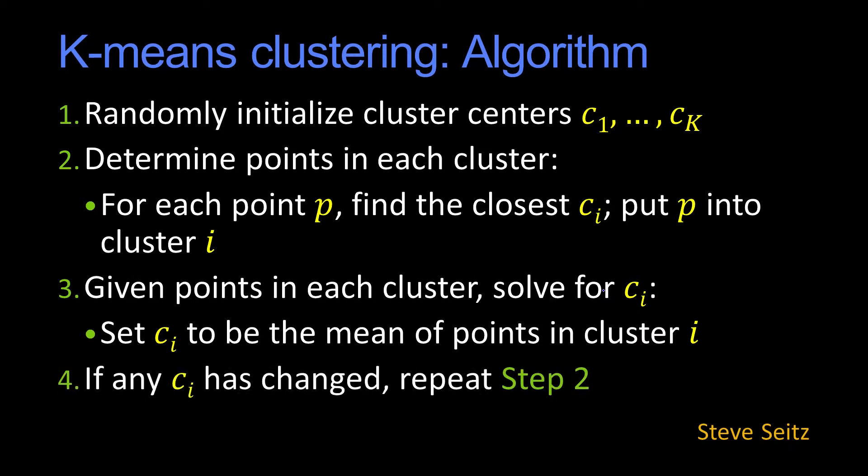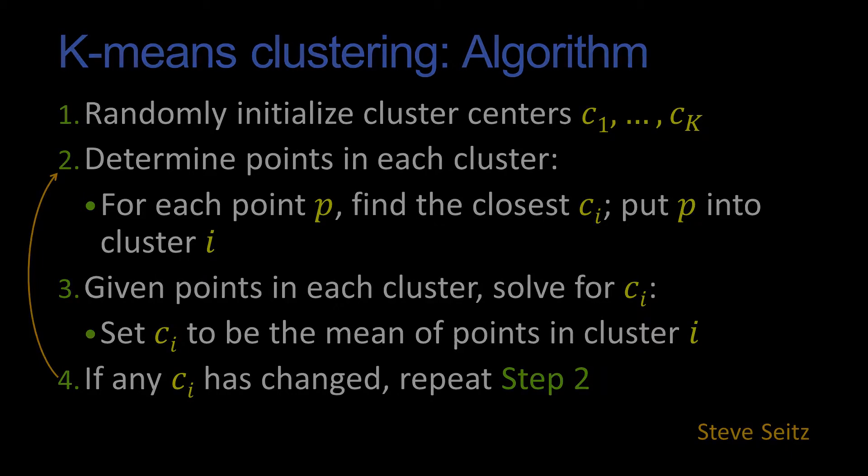And step four is, well, if any of the cluster centers moved, and the only reason they would have moved is because you changed the assignments, you go back to step two. And this is classical k-means, and I assume most of you have seen that. But just showing it to you in the context of segmentation.